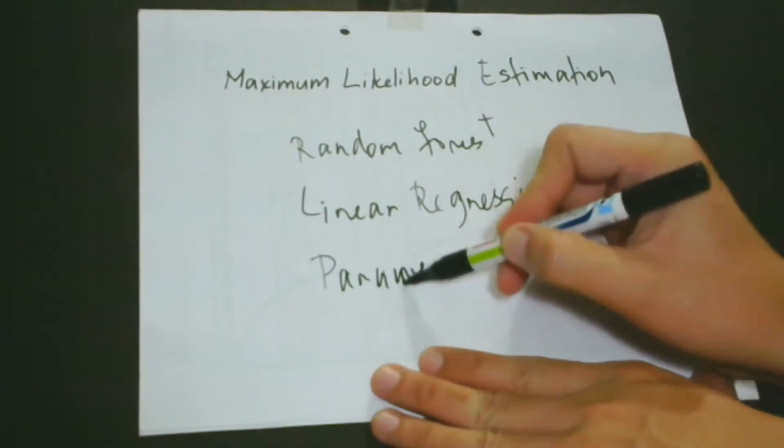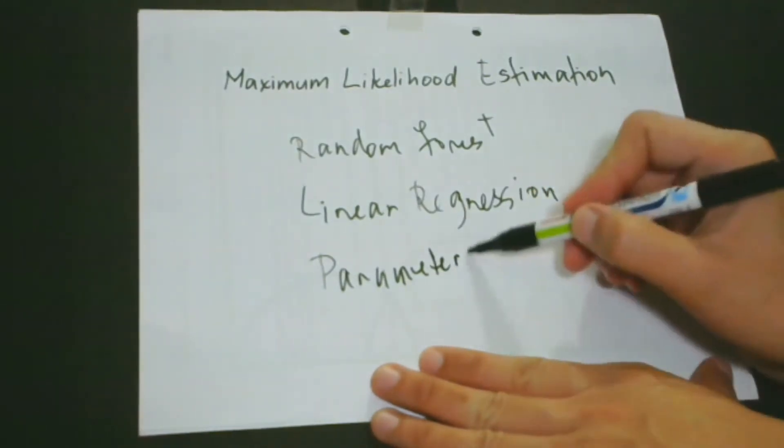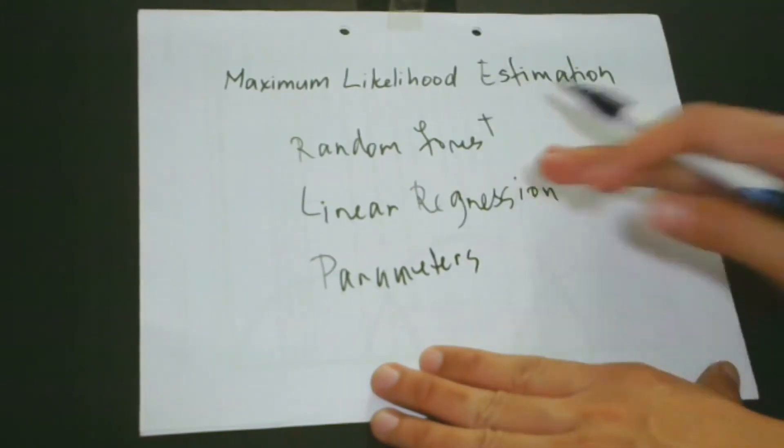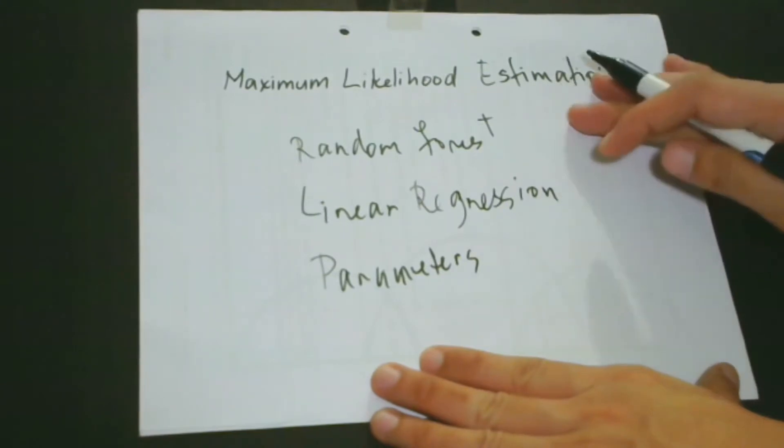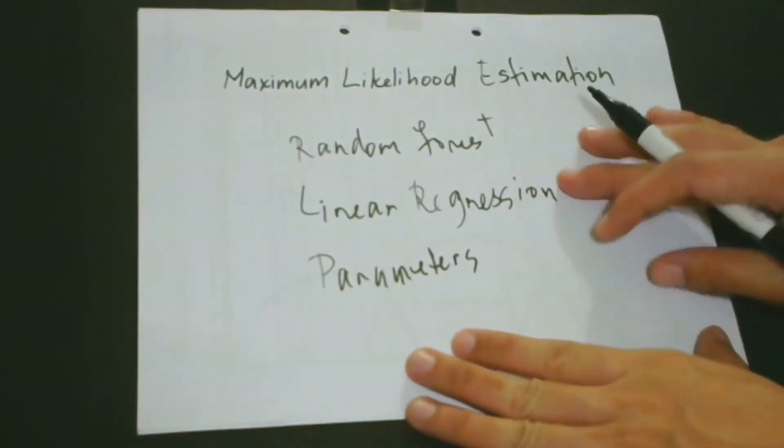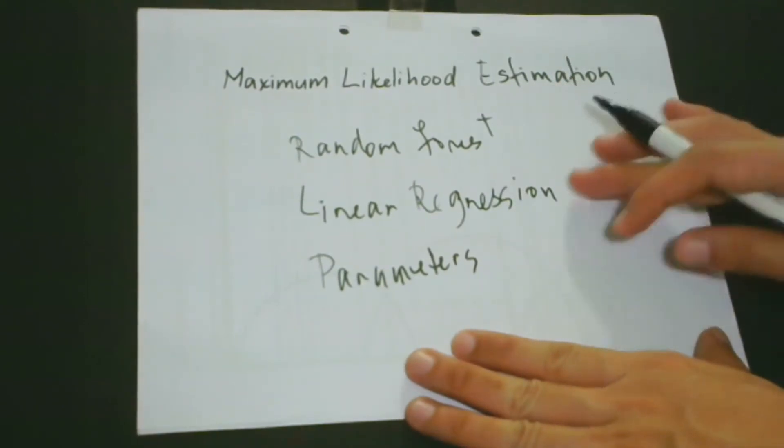Don't ever forget this because this is the heart and soul of maximum likelihood. Each model has its own parameters. Random forest has its own parameters and also linear regression. The question is, why do we have to find the parameters of a certain model?